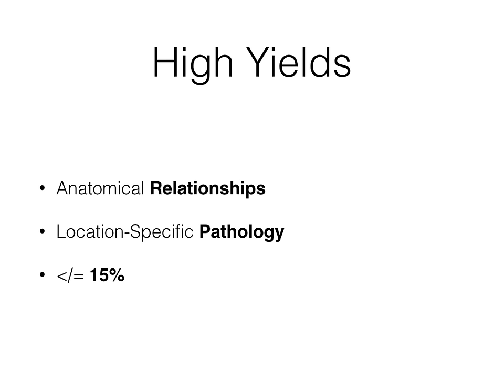That transitions us into the next point: location-specific pathology. Certain tumors at certain points of the body cause very classic pathology. Keep in mind that some tests can have up to 15 percent anatomy content. That might be unlucky if you don't enjoy anatomy, but these are self-reported figures from multiple students who have recently taken Step 1. Let's get started with some classic pathognomonic examples.